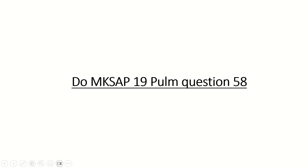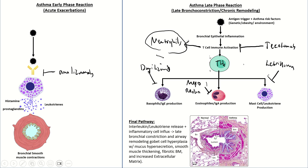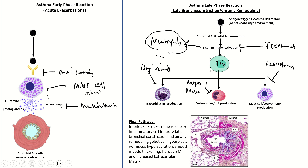Other management options for asthma: mast cell inhibitors are no longer commonly used. Leukotriene receptor antagonists like montelukast can be added as an alternative or adjunct — some patients respond and some don't, and response isn't always predictable by phenotype. They're most clearly indicated when you suspect aspirin-exacerbated respiratory disease.